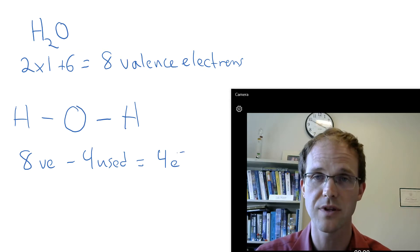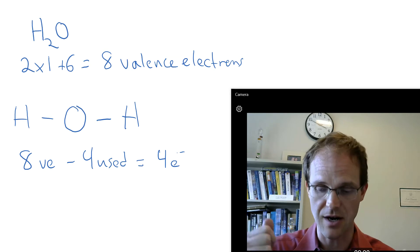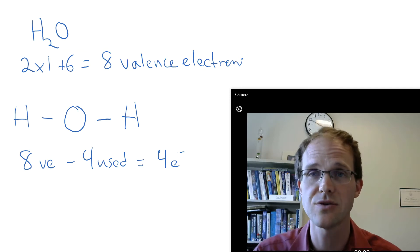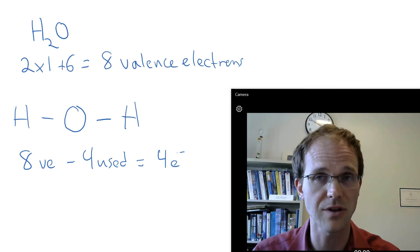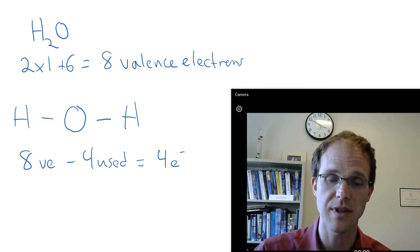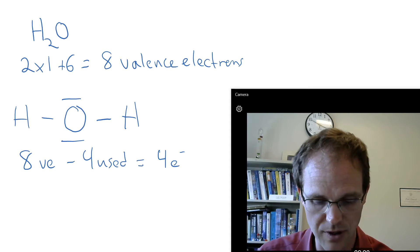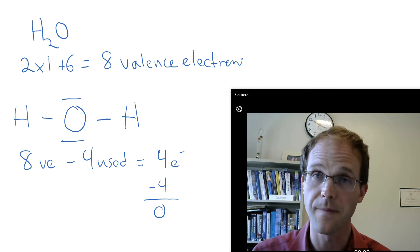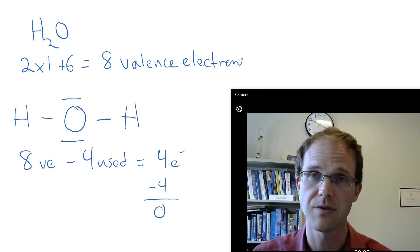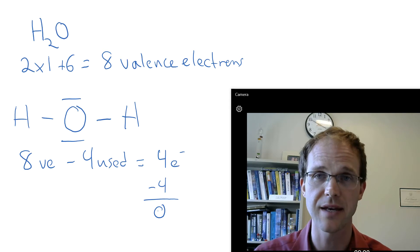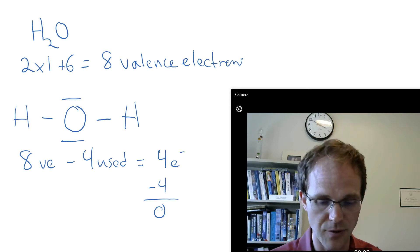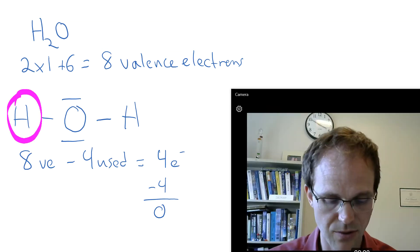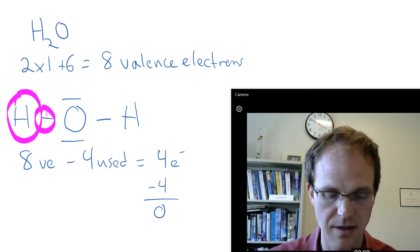Now those 4 electrons left, where do we put them? Generally, we put them on the outer atoms first. And in our case, the outer atom would be the hydrogen atoms. But if you look, the hydrogen's already happy. He has 2 valence electrons. He only needs 2 valence electrons to look like helium. So we can't put it on the outer atoms. So we're going to put it then on the inner atoms. And we're going to put 2, 4 electrons on the inner atom. And now we have 0 electrons left.